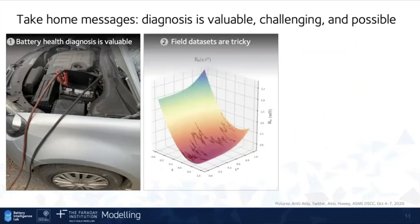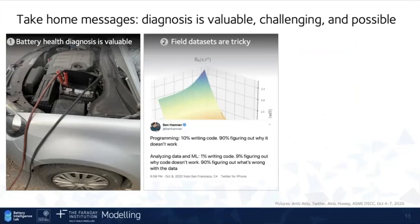Secondly, field data sets as distinct from lab are really tricky. They don't behave well, there are gaps, and there are lots of dependencies and things that we have to worry about. As Ben Hamner from Kaggle said, analyzing data machine learning is 1% writing code, 9% figure out why code doesn't work, and 90% figure out what's wrong with the data. That's definitely the case here. And I might add what's wrong with our assumptions.